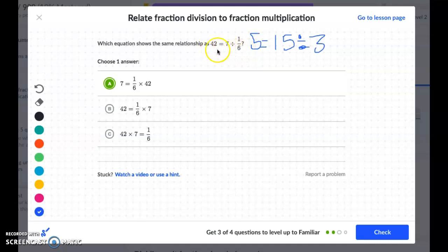But let's double check here. They have forty-two equals one-sixth times seven. So if I use my same numbers here, that would mean five equals three times fifteen, well that's not going to work. Forty-two times seven equals one-sixth. So a is going to be my best option.